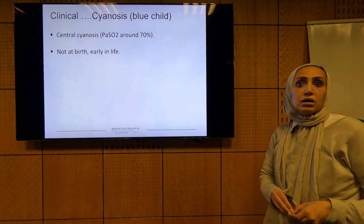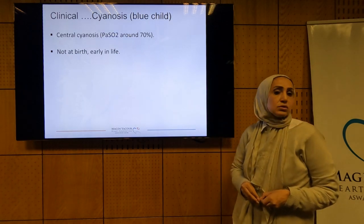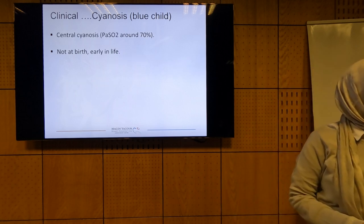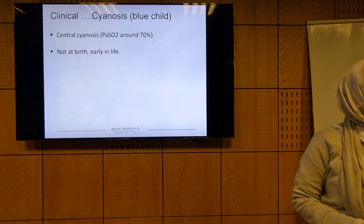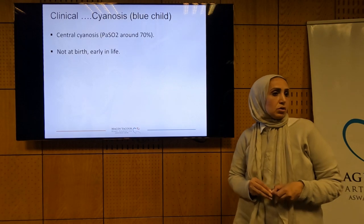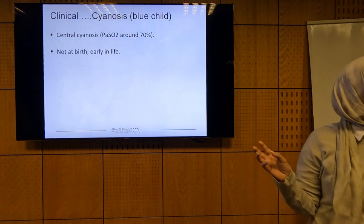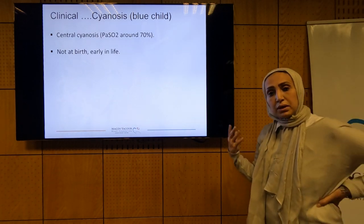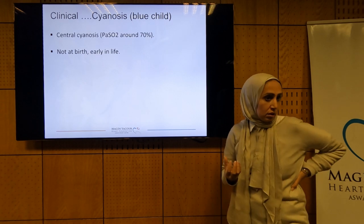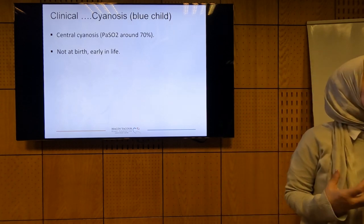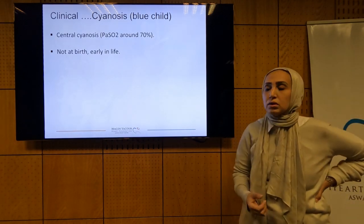The cyanosis is mainly hemodynamically dependent on RVOT obstruction and the magnitude of the right-to-left shunt, resulting in central cyanosis. If we have a call from the neonatology ICU about a blue child, Tetralogy of Fallot is not the first possibility. Why? Because the pulmonary blood flow is lower than normal, and neonates usually have extra pulmonary blood flow through a duct. Tetralogy of Fallot usually presents in early childhood, not as a neonatal call.